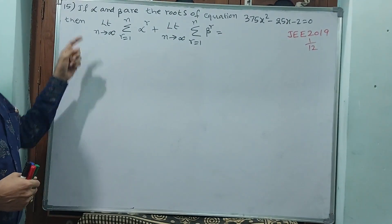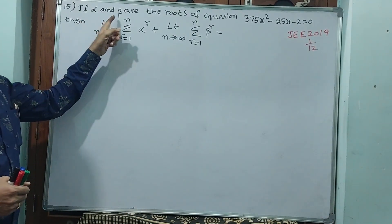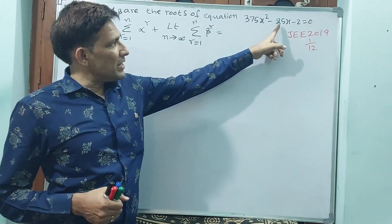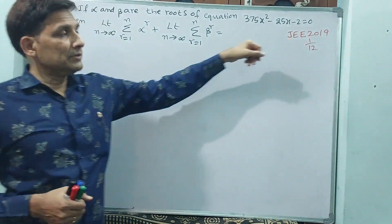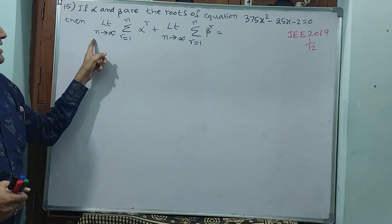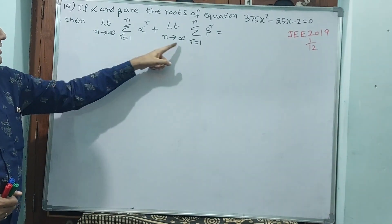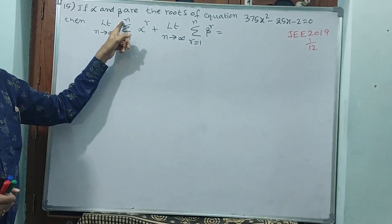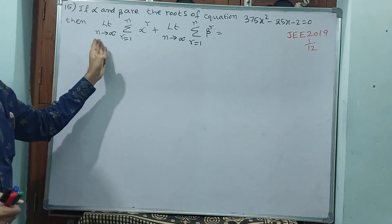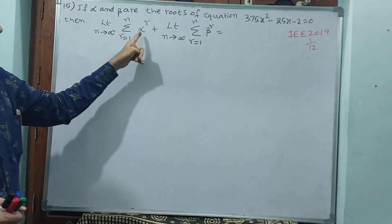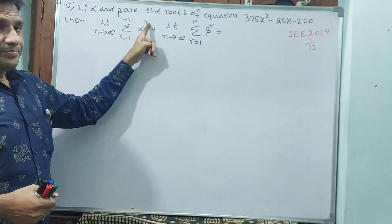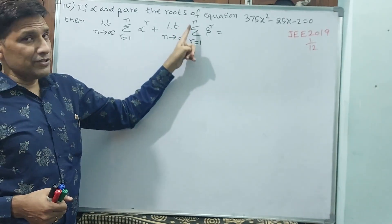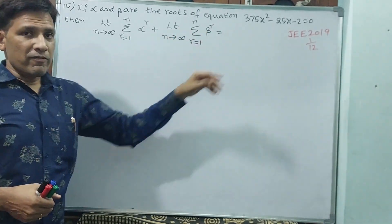See question number 15: if alpha and beta are the roots of the quadratic equation 375x squared minus 25x minus 2 equal to 0, then limit n tends to infinity, r is equal to 1 to n — that means 1 to infinity — of alpha to the power of r, plus limit n tends to infinity, r equal to 1 to infinity sigma beta to the power of r. What is the value they are asking?